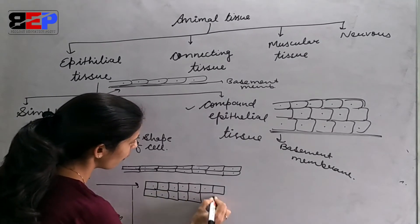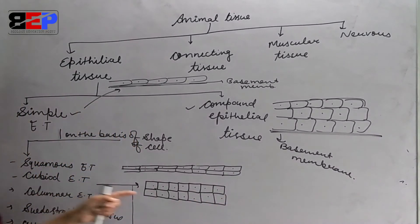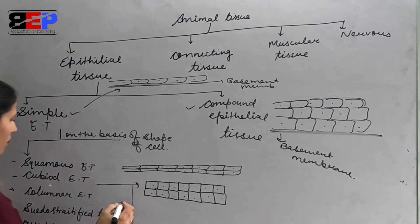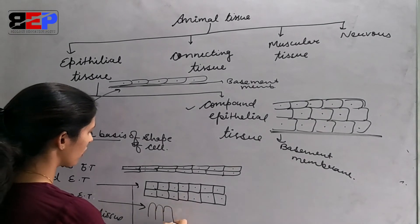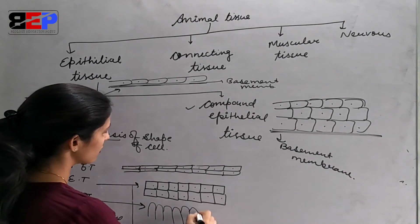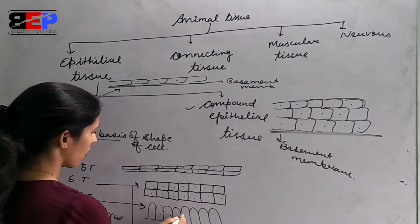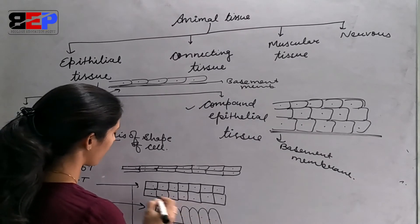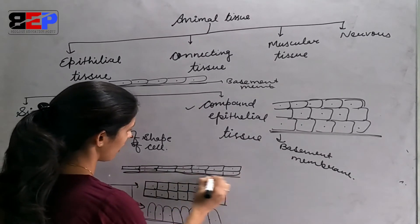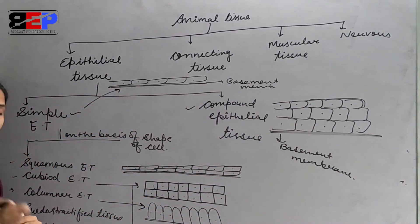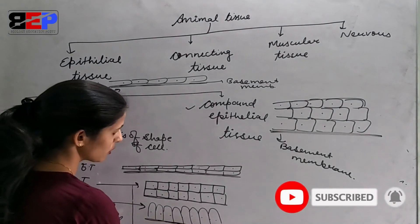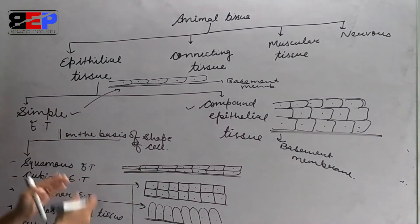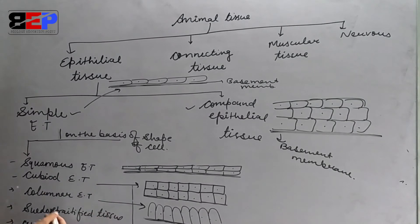This is columnar epithelium — long, column-like cells are present in a single layer. The basement membrane is present beneath this layer, as epithelial tissue always lies on the basement membrane, which is a non-cellular layer.